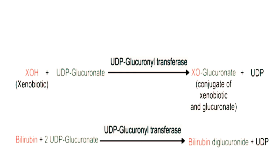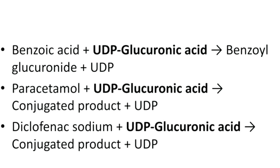The most important reaction requiring glucuronate as a conjugating agent is the conjugation of bilirubin. Bilirubin is water-insoluble and is converted into a water-soluble compound by UDP-glucuronyl transferase, which transfers glucuronate from UDP-glucuronic acid to bilirubin, forming bilirubin diglucuronate — two molecules of glucuronic acid joining one bilirubin molecule. Bilirubin diglucuronate is more water-soluble and less toxic. Apart from bilirubin, glucuronic acid also conjugates benzoic acid, paracetamol, and diclofenac sodium.